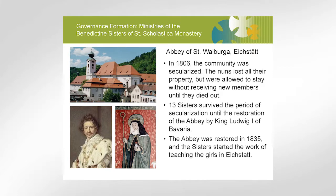Our particular house comes from the German branch of Benedictines that came to the United States. The sisters came from the Abbey of St. Walburga in Eichstätt. They were part of the territory conquered by Napoleon, and in 1806 he forced the community to be secularized. The nuns lost all of their property. They were allowed to stay in the Abbey but couldn't have any new members, and were supposed to just stay there until they all died. By the time of Napoleon's death, there were still 13 sisters that survived.